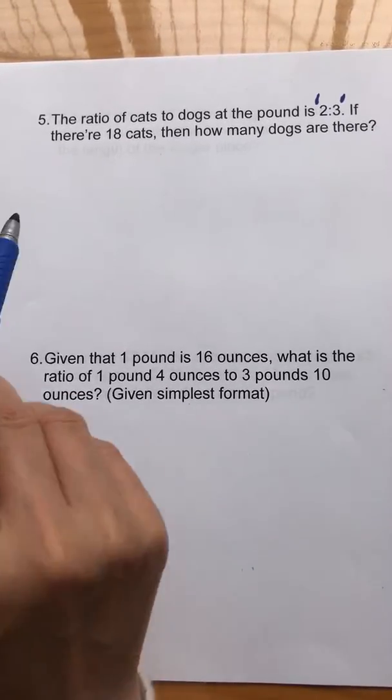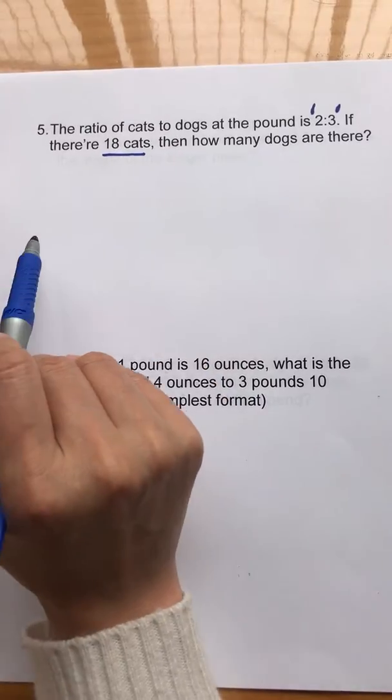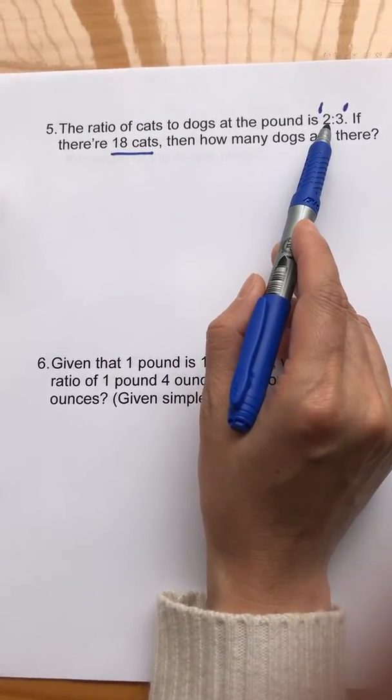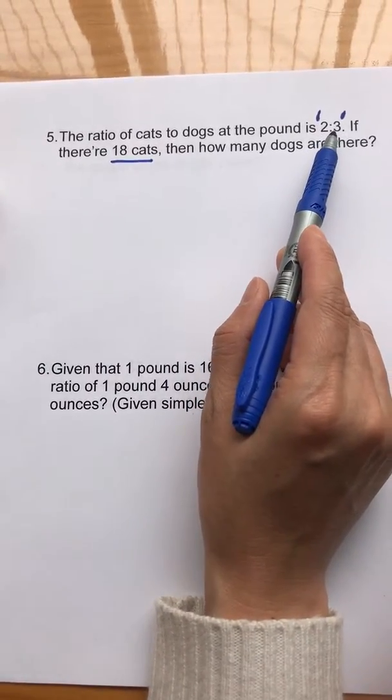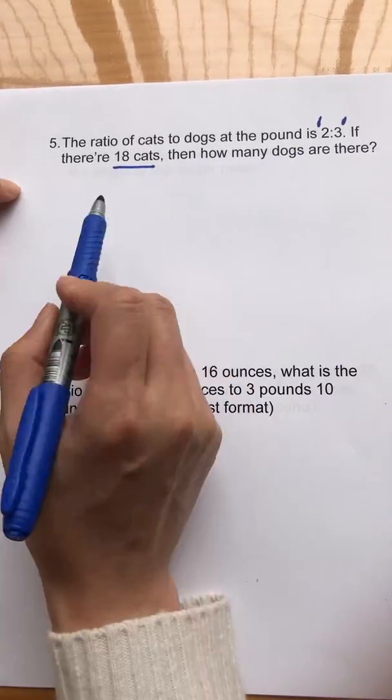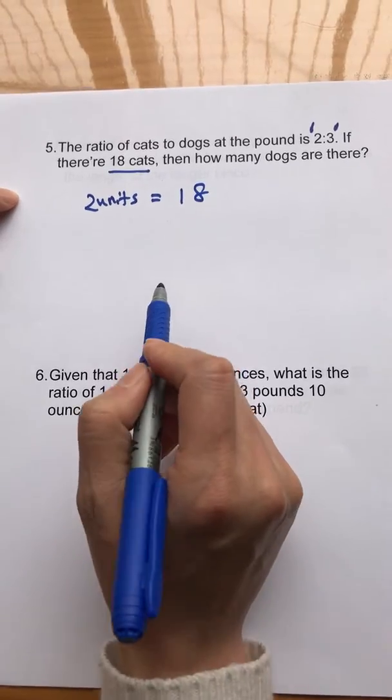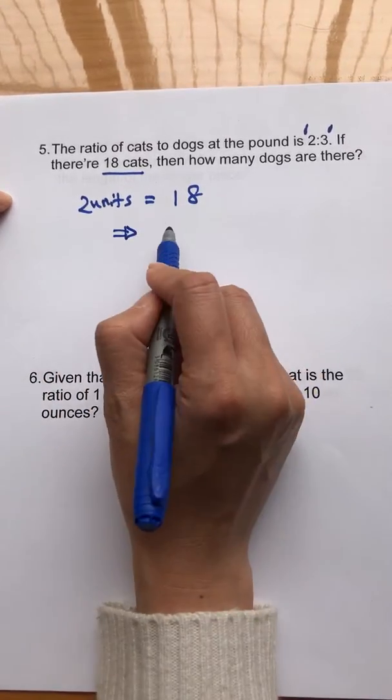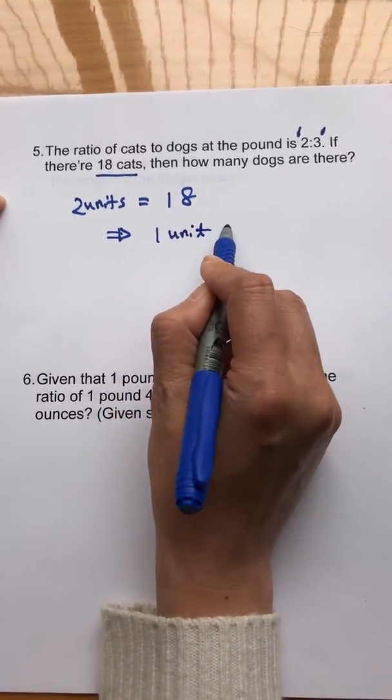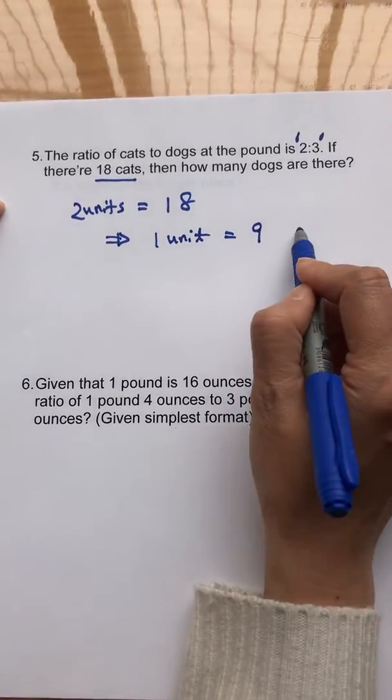Okay, if we have a total of 18 cats and a ratio of two to three, we can say we have two units of cats. Two units of cats equals a total of 18. So then we can say one unit of cat equals nine cats.